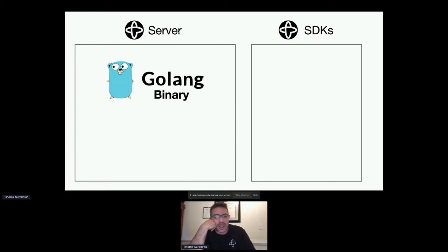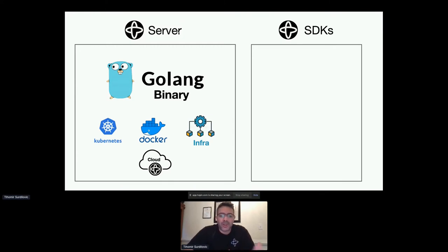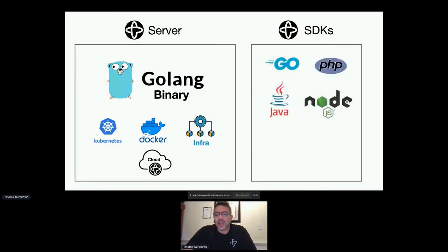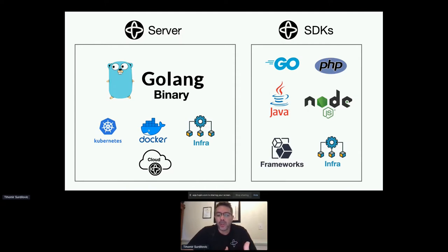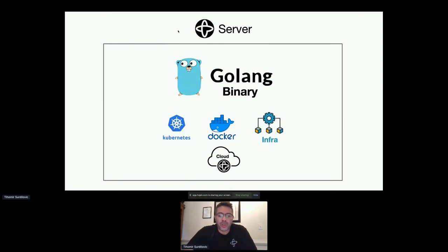When we talk about Temporal it's really two things: the server and the different SDKs. The server itself is just a Golang binary — you can deploy it on Kubernetes, on Docker, or in any infrastructure you currently have available. In addition, Temporal provides a cloud platform where if you don't want to deploy it yourself you can run it on Temporal Cloud. As far as the SDKs go, Temporal currently has four SDKs: Go, PHP, Java, and Node. Since you're using a programming language approach to write your business applications, you can deploy them on any framework or infrastructure you currently have.